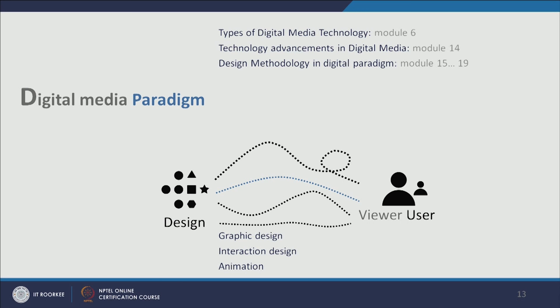In graphic design — still images and posters — we will discuss. In Module 6 we will discuss what the different types of digital media technology available are, how this field is emerging, how they are different — a brief introduction about the field will be given in Module 6.